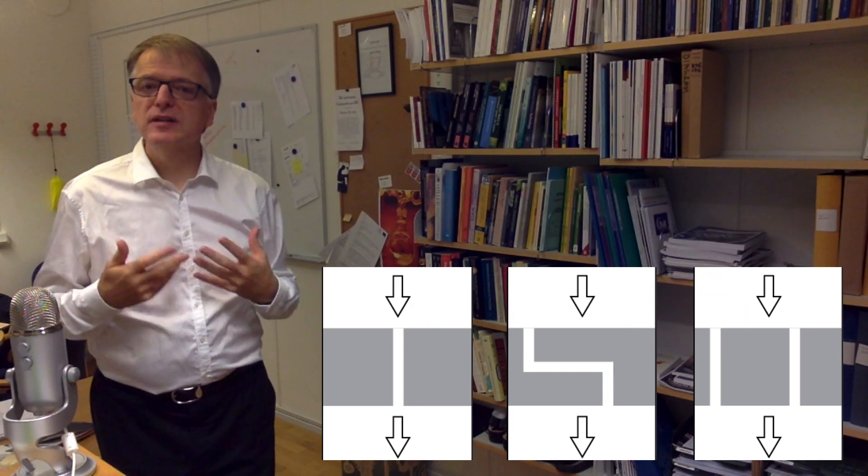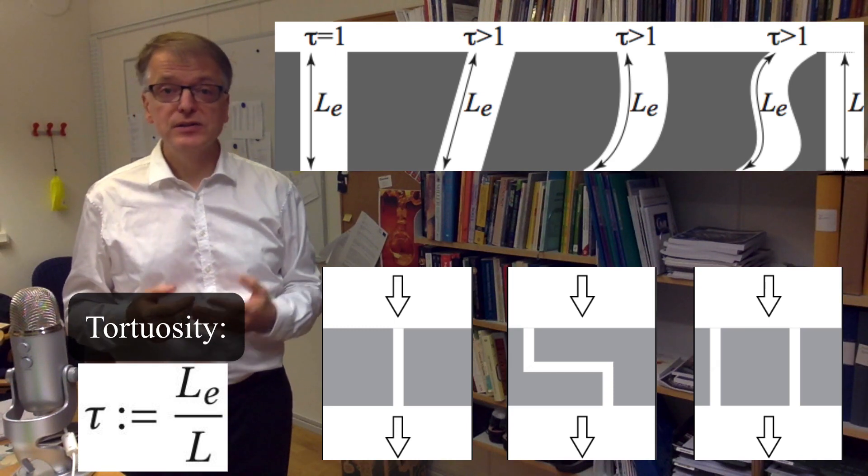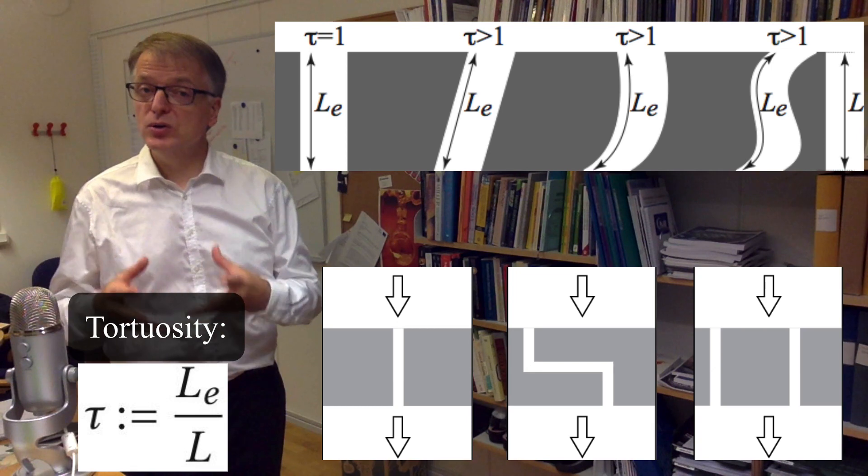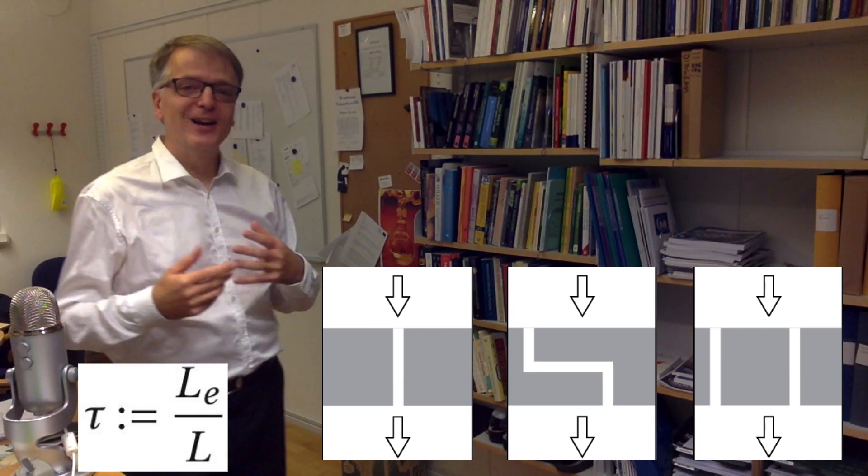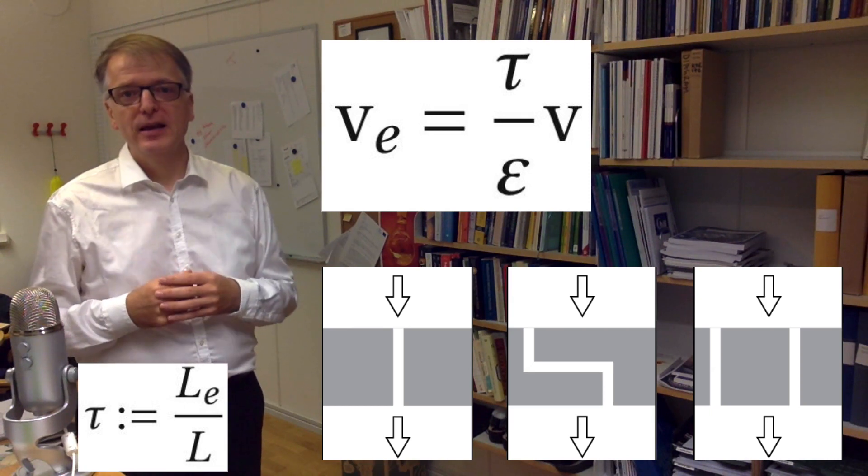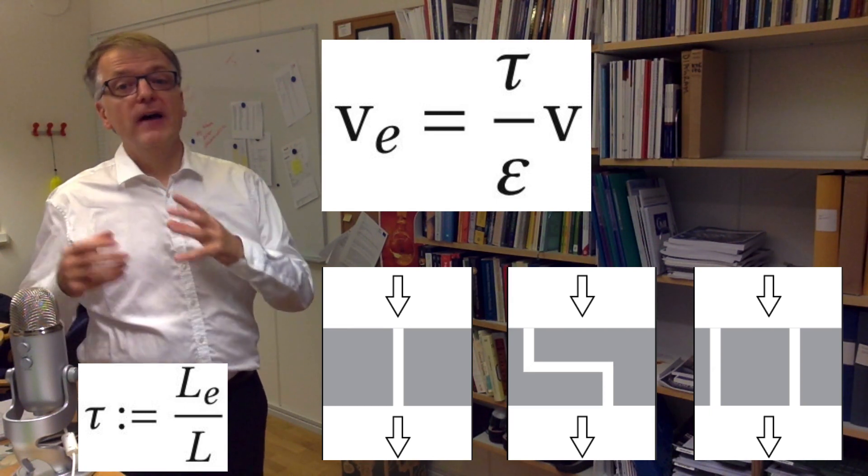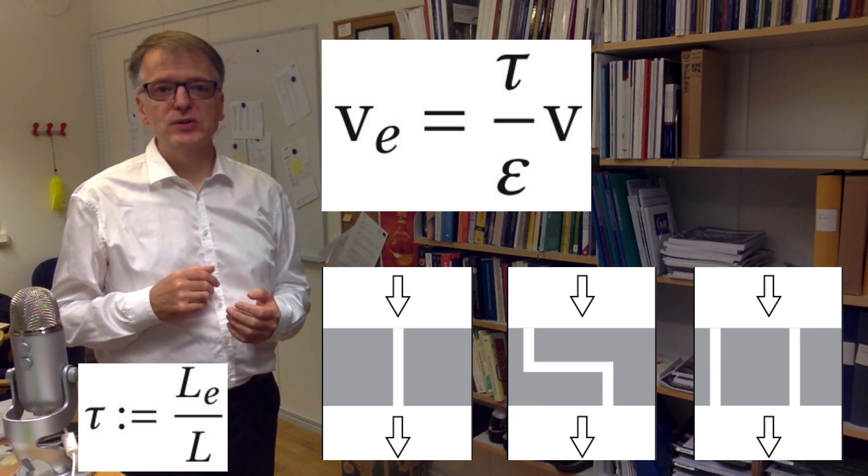If we now define the tortuosity tau of a porous media as the true length of the flow channels divided with the thickness of the material, it can be shown that the true relation between the effective velocity and the superficial velocity looks like this. The effective velocity equals the superficial velocity multiplied with the tortuosity and then divided with the porosity.